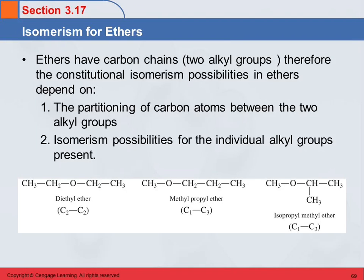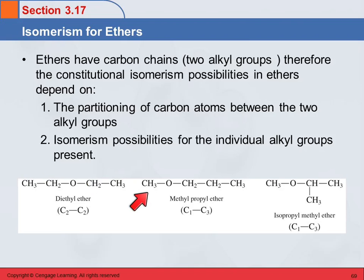We were talking about ethers. Ethers have two carbon chains attached to an oxygen, and so we have possibilities for isomers. Here are illustrations of some isomers — ethers that contain four carbons. You can have two carbons on each side, or one on one side and three on the other, or one on one side and a branched three on the other. The isomerism comes about from variations in the individual alkyl groups that are present.